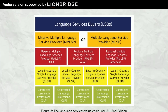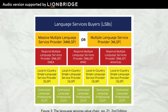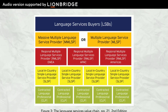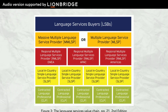Figure 3: The Language Services Value Chain. This figure depicts the Language Services Value Chain as five layers. At the top, we see Language Services Buyers, or LSBs. The next layer down shows Massive Multiple Language Service Providers, or MMLSPs, and Multiple Language Service Providers, or MLSPs. The next layer down shows Regional Multiple Language Services Providers, or RMLSPs, for each region. The next layer down shows Local, In-Country, Single Language Service Providers, or SLSPs. The last layer on the bottom shows Contracted Language Professionals, or CLPs.